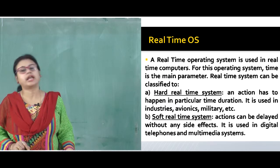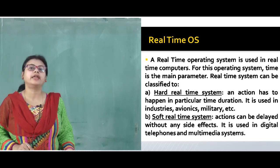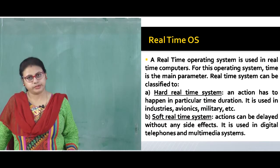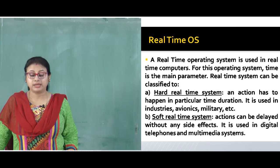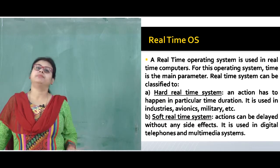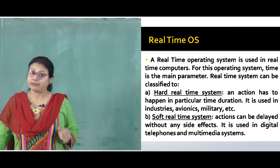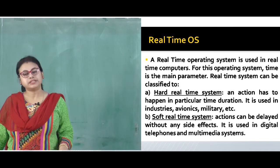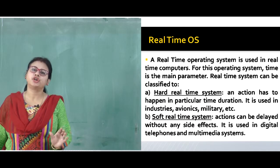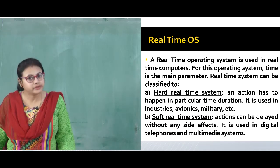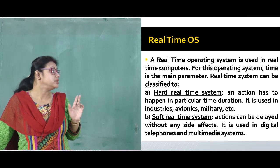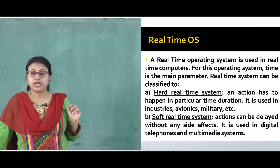A very crucial type is the real-time operating system, used in real-time computers where time is the main parameter and prime factor. Real-time systems are classified into two categories: hard real-time systems and soft real-time systems. In a hard real-time system, an action has to happen within a particular time duration. It is used in industries, avionics, and military applications.